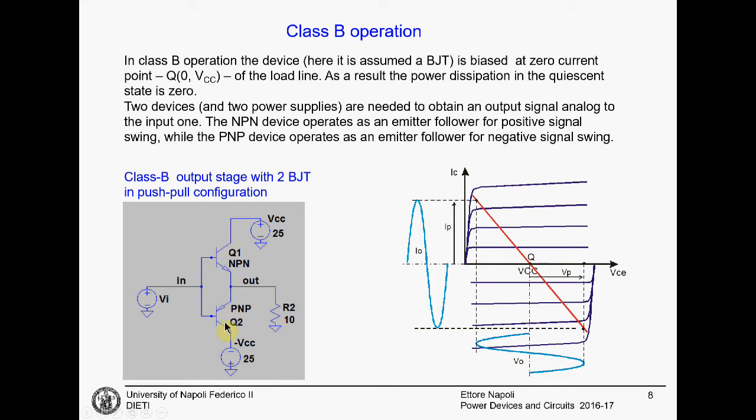The devices are biased so that when there is no input signal, the output is zero. When there is no signal on the input, since the output is zero, the input is zero, the base-to-emitter voltage is not enough to switch on neither Q1 nor Q2. These two devices are switched off. There is no current flowing.